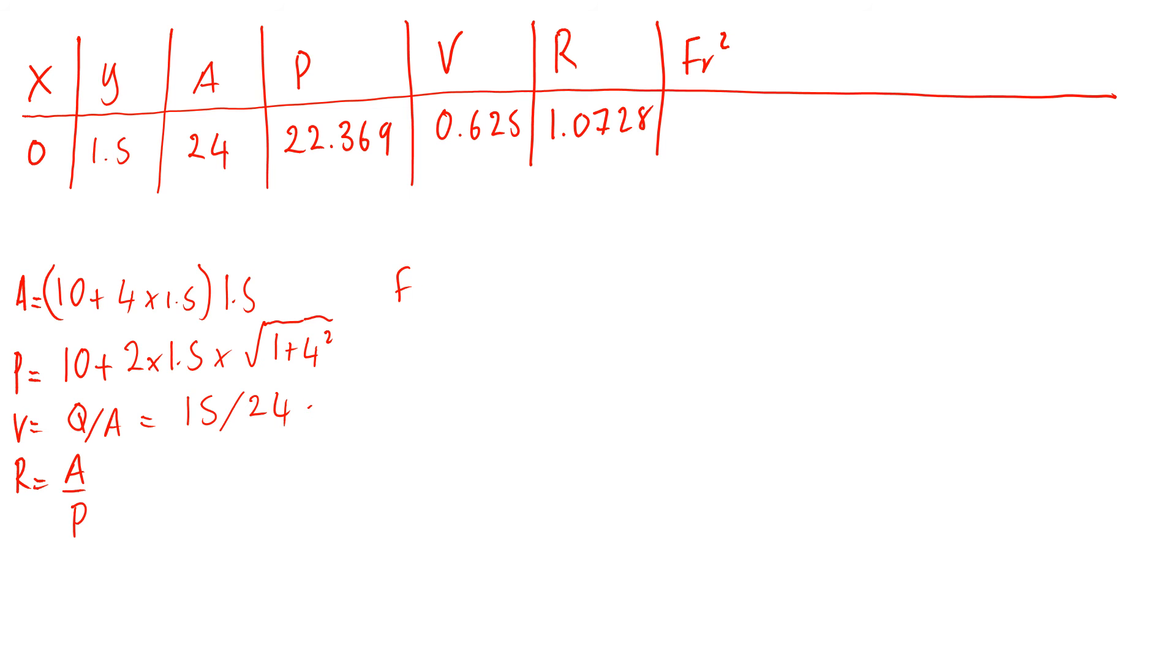Next term is Fr², Froude number squared. Fr² equals v² over gy, so 0.625² over 9.81 × 1.5, and the answer you get for that is 0.0265. The next one is 1 - Fr², which is just 1 minus that term, and you get 0.973.